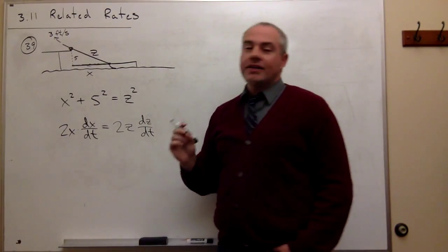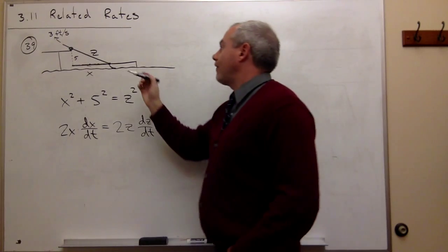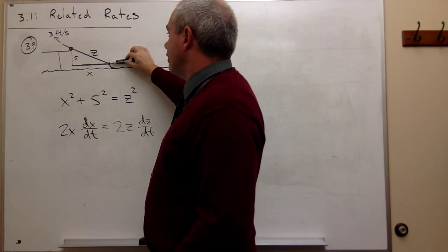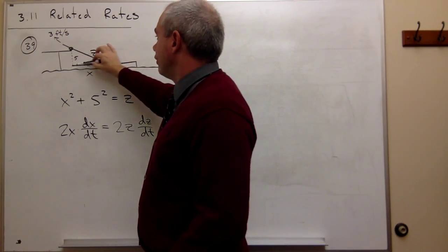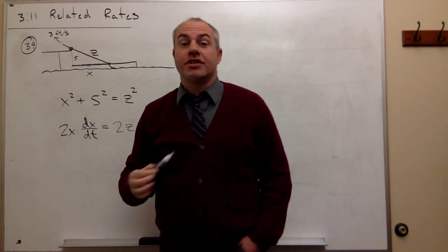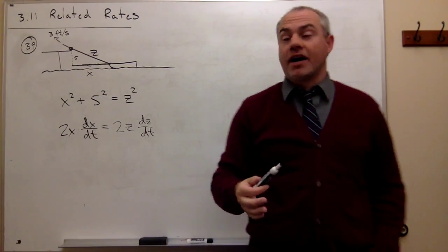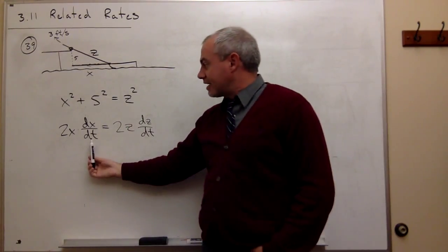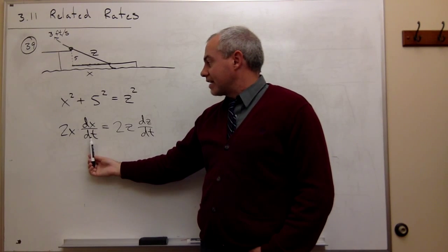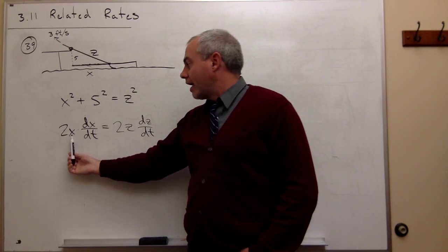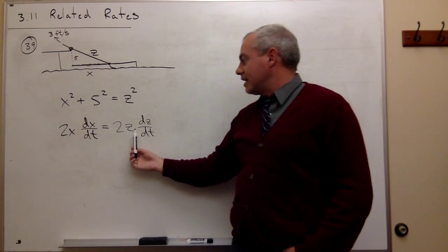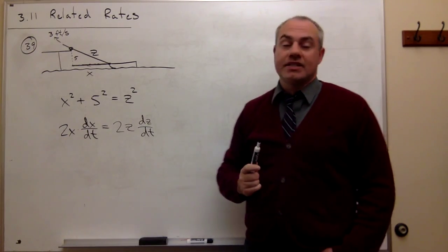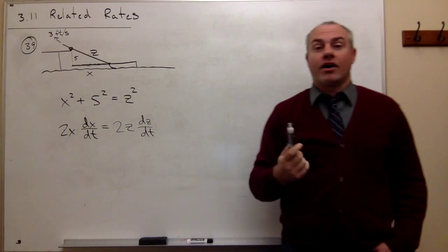What we're trying to figure out here is how fast is the boat being pulled toward the dock, in other words the change in x over time. So we're looking for dx/dt, and in order to find dx/dt, I really need to know what x is, what z is, and what dz/dt is.